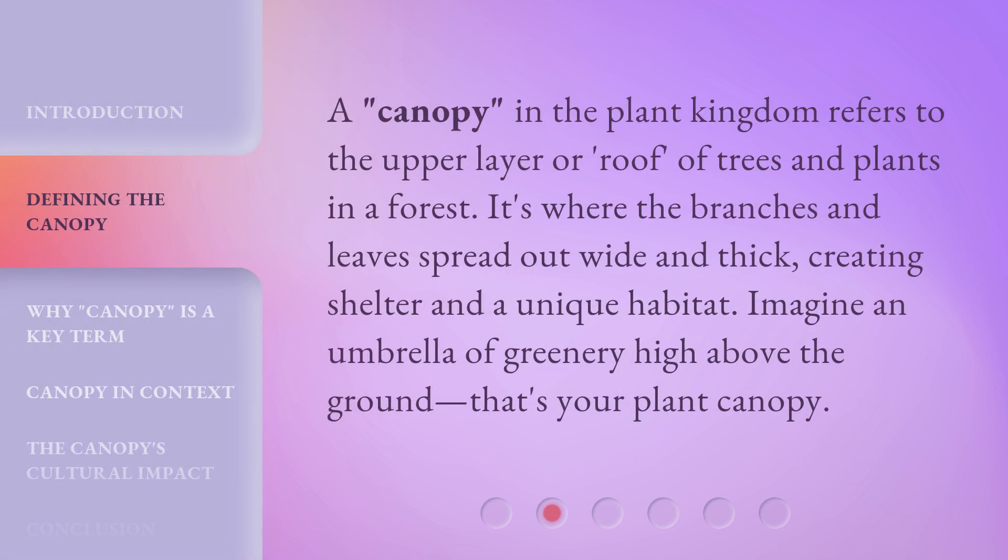A canopy in the plant kingdom refers to the upper layer or roof of trees and plants in a forest. It's where the branches and leaves spread out wide and thick, creating shelter and a unique habitat. Imagine an umbrella of greenery high above the ground — that's your plant canopy.